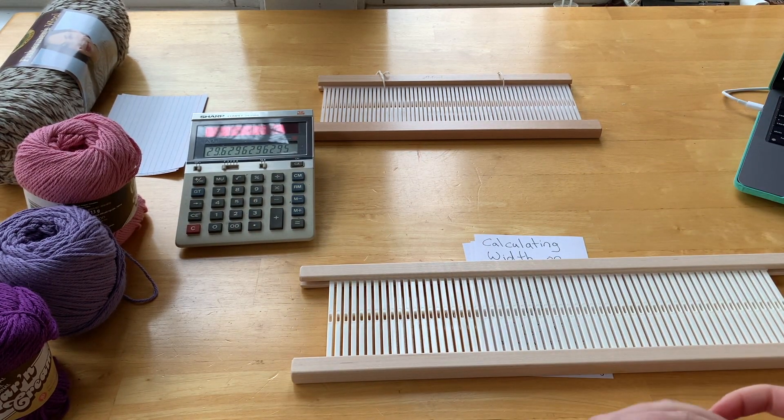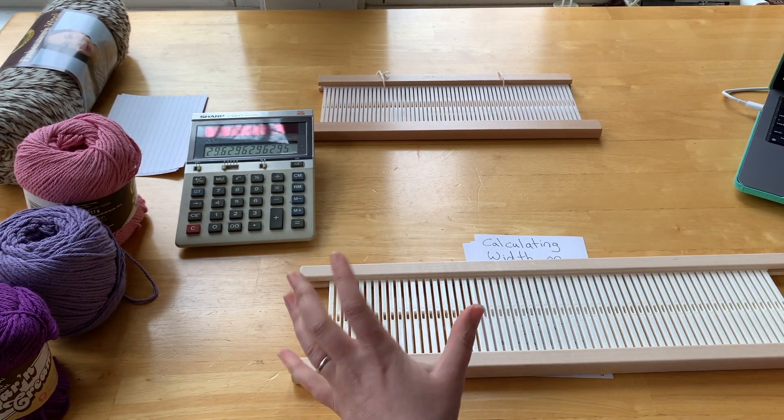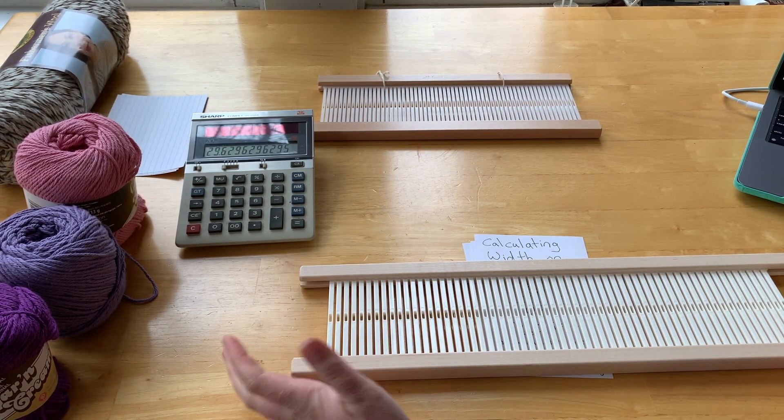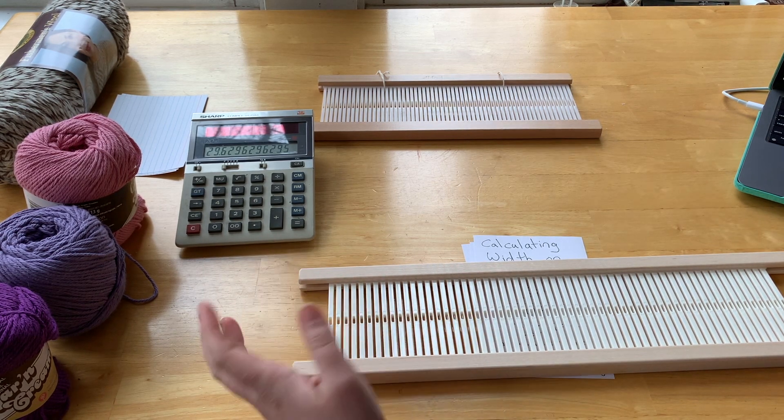So I always, always recommend that you measure out your heddle to get a good idea of what it actually has. So how do you check that?